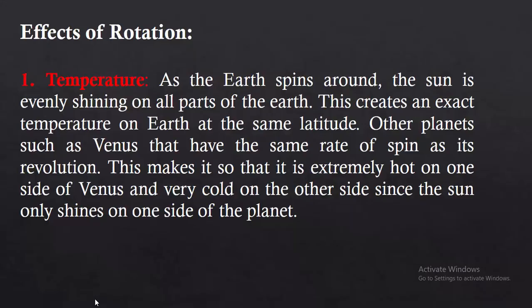Following the effects of rotation. Number 1: Temperature. As the Earth spins around, the sun is evenly shining on all parts of the Earth. As we know, the day and night are approximately 12 hours each. Collectively, one rotation is 24 hours. This makes it very obvious that the temperature is evenly dispersed in all parts of the Earth.